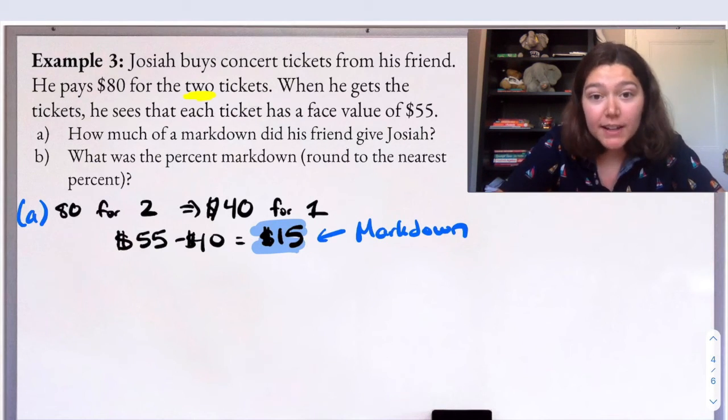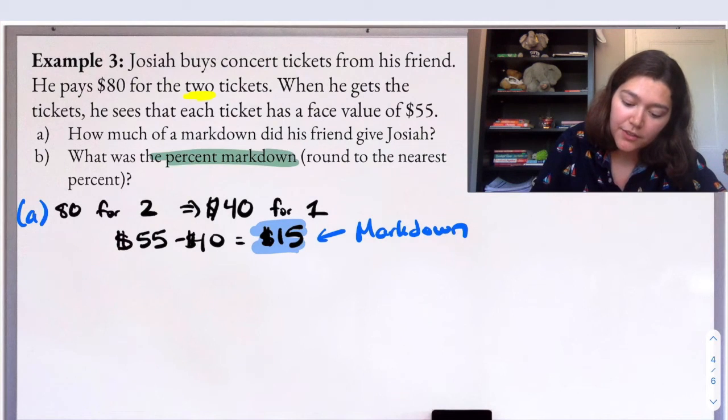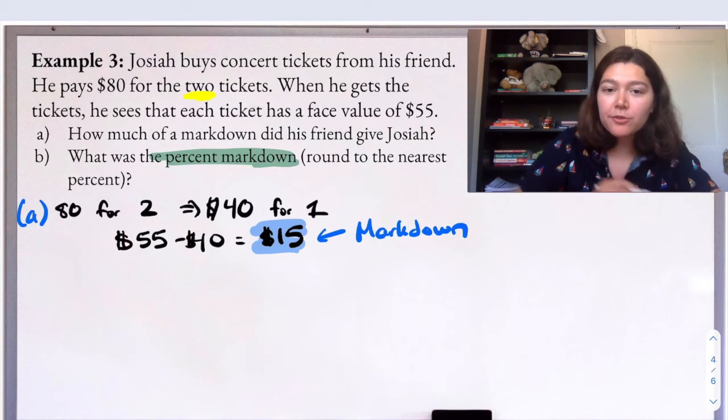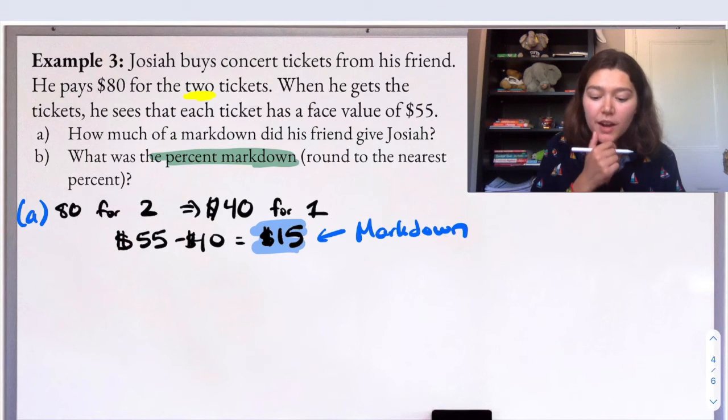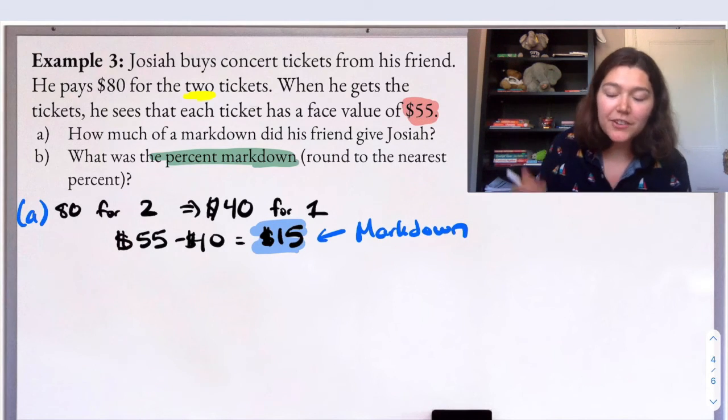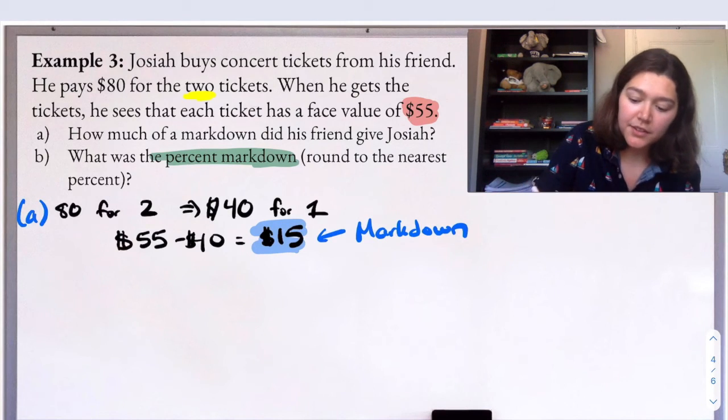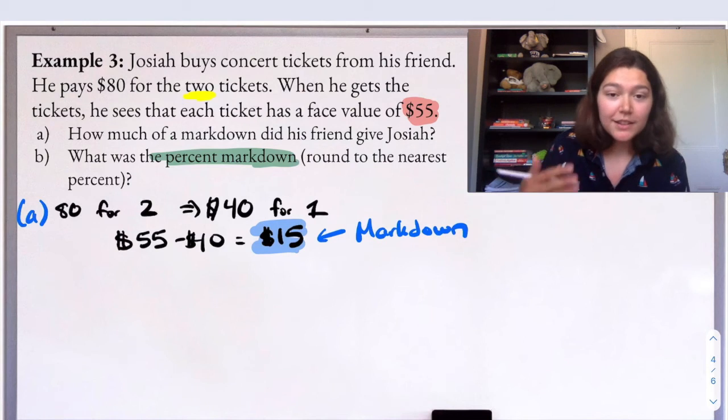And then we need to use that to answer part B. What was the percent markdown? So we've already found our part, our markdown. We're trying to find the percent markdown. So we know that's what we normally mark as green. That's our percent. And then we need the original. So what's the original cost of one ticket in this problem? Yep, the original cost of one ticket is $55. It's our face value sticker price. That's what we think of as our whole. So that's going to be our whole. We're trying to find our percent and we have our part, our markdown. So now just go ahead, substitute it in. I'm going to substitute into the percent proportion and solve for the percent.